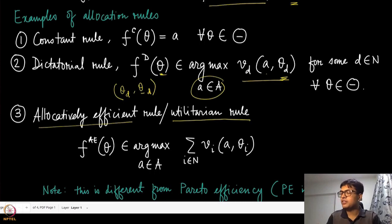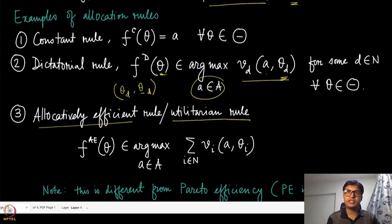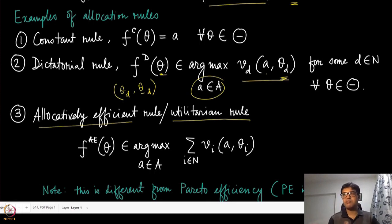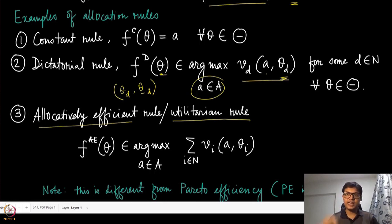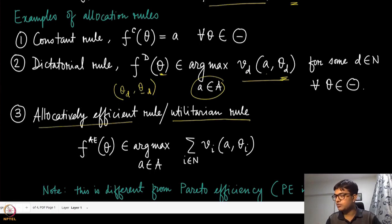The allocatively efficient rule looks at the sum of values of all agents. If you pick a specific alternative — say building a bridge, a park, or a museum — it gives different valuations to different players. We take the sum of the values of all the agents and pick the allocation that maximizes that sum. This allocation is called allocatively efficient: we pick the alternative that maximizes the aggregate sum.